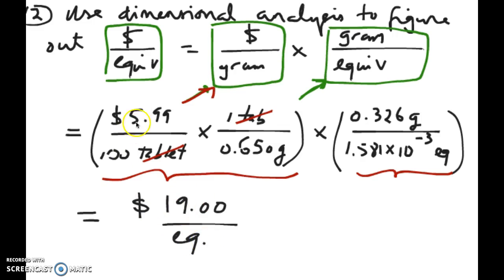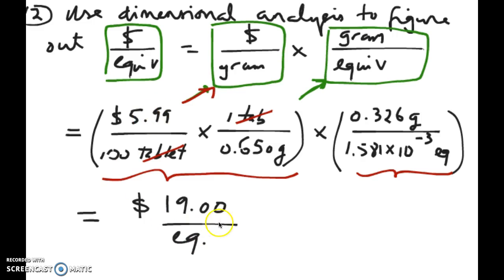That tells you that you're really paying $19 for every equivalent of active ingredient. Notice that number is different from the $5.99, because $5.99 is how much you're paying for a certain amount of tablet. In a tablet, you don't necessarily have one equivalent — you might have very, very little equivalents of active ingredients. That's why the cost seems so much cheaper for the tablet. But what you're trying to figure out is how much do you pay for the active ingredient specifically.